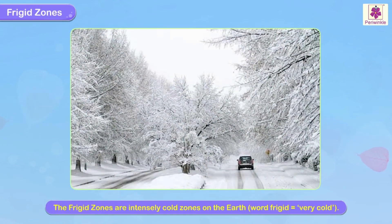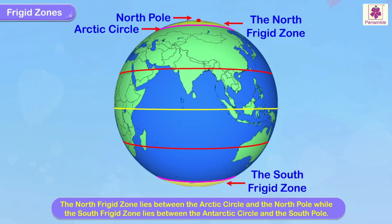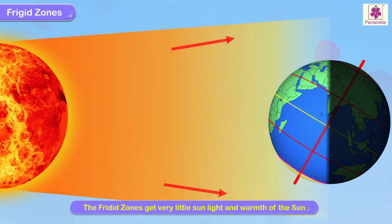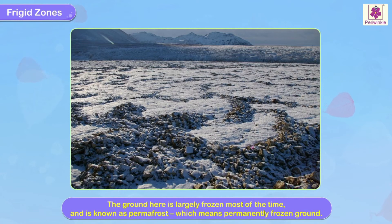3. Frigid Zones: The frigid zones are intensely cold zones on the earth — the word frigid means very cold. The north frigid zone lies between the Arctic Circle and the north pole, while the south frigid zone lies between the Antarctic Circle and the south pole. Being at the poles, the frigid zones get very little sunlight and warmth from the sun.